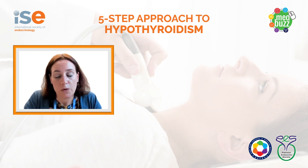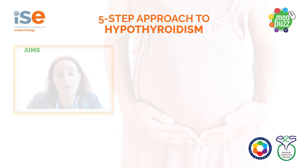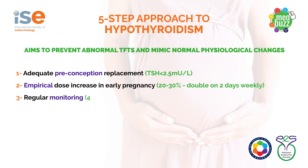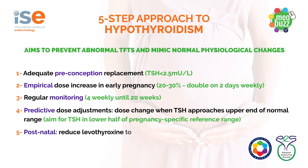It is really important that thyroid status is optimized before women become pregnant. The general recommendation is that in women treated with levothyroxine before pregnancy, serum TSH should be below 2.5 mIU/L. Ideally, women should be advised to double their levothyroxine dose on two days of the week as soon as they find out they are pregnant, given the increased levothyroxine requirements during pregnancy. Thyroid function should be checked on a four-weekly basis in the first 20 weeks of pregnancy, as the fetus is most dependent on maternal thyroid hormones during this period.